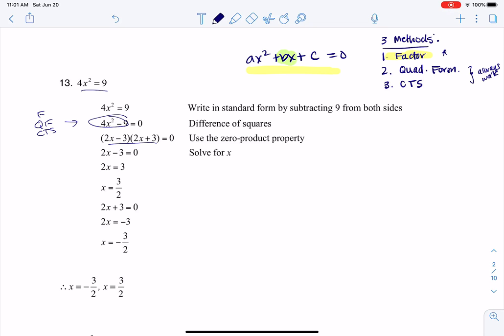It happened to be a difference of squares, and when you have two factors or two terms multiplying to 0, you use the zero product property. So either 2x minus 3 was 0, or 2x plus 3 was 0. And when we solve that, we get x equal to 3 halves or negative 3 halves.